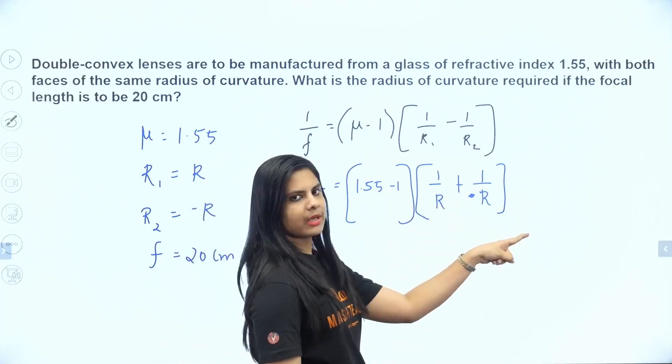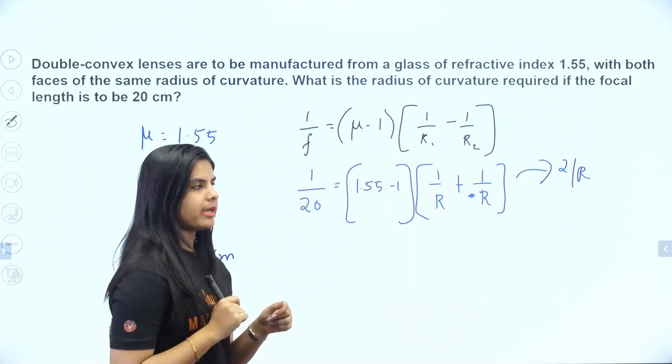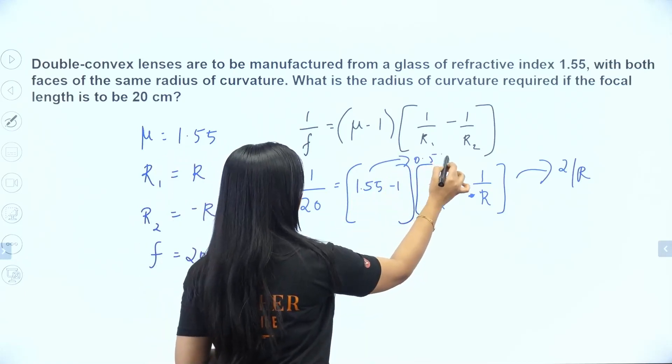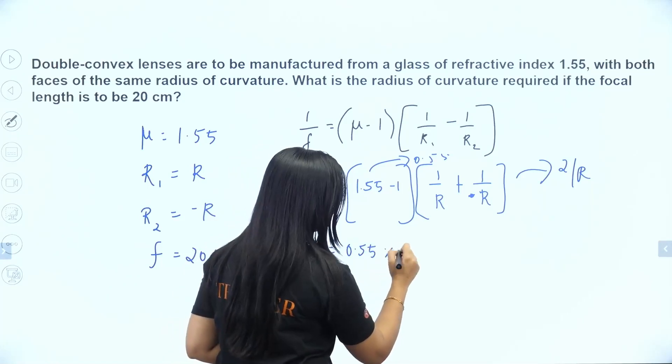That will become 2. So the value 2 is equal to 1/R1.